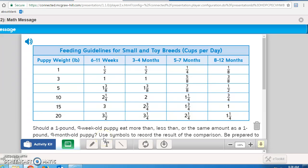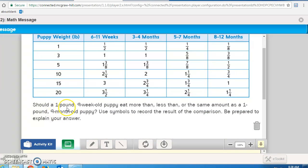So notice it's being real specific here that you need to show me the work that you did in order to get the answer for this page. So, should a 1-pound, 9-week-old puppy eat more than, less than, or the same amount as a 1-pound, 9-month-old puppy?